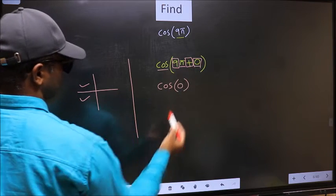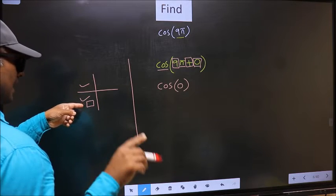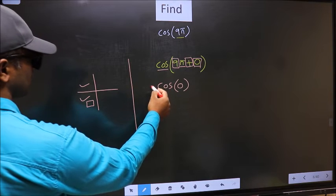Here we have plus, so the angle lies in third quadrant. And in the third quadrant, cos is negative, so we should put negative.